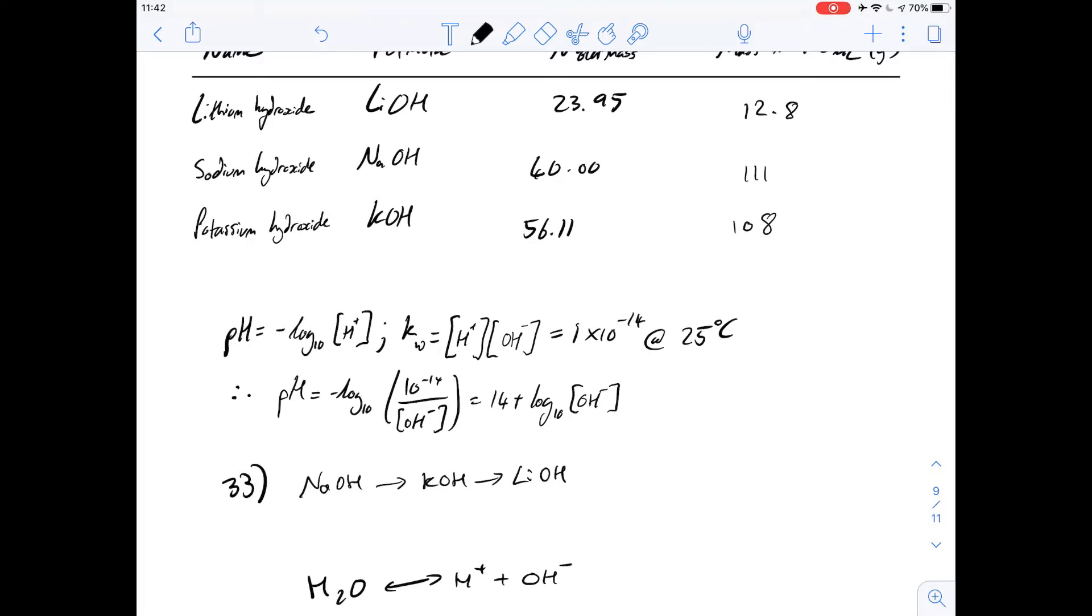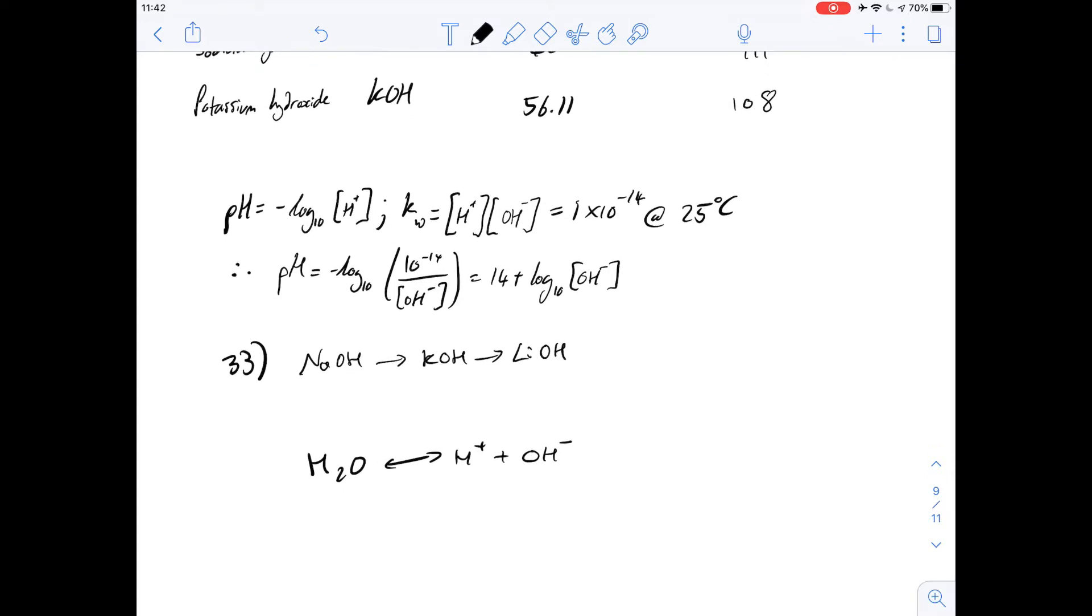The other way is to look at the water dissociation equation, where there's an equilibrium between water and protons and hydroxide ions. The more soluble it is, the more hydroxide ions you're adding to the solution when it's dissolved. If you increase the concentration of hydroxide ions, you're moving the position of equilibrium to the left, therefore decreasing the concentration of hydrogen ions. Because hydrogen ions are inversely proportional to the pH, the more hydroxide ions you add, the greater the effect on the pH. So the more soluble it is, the larger the pH, which means the answer for number 33 is C.